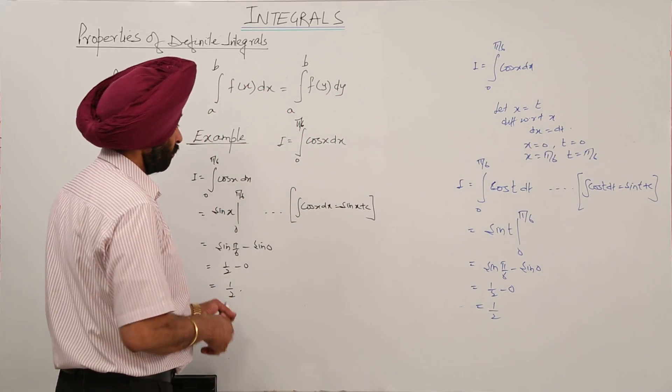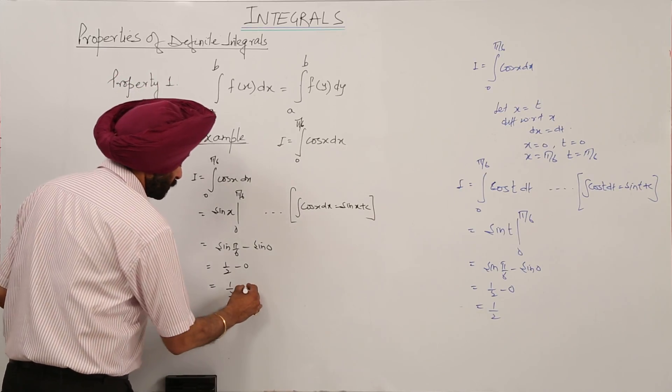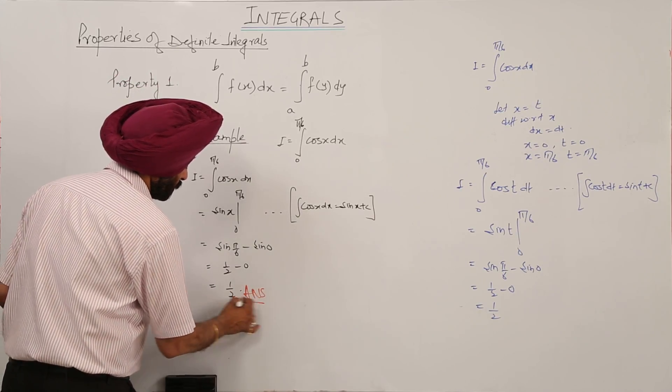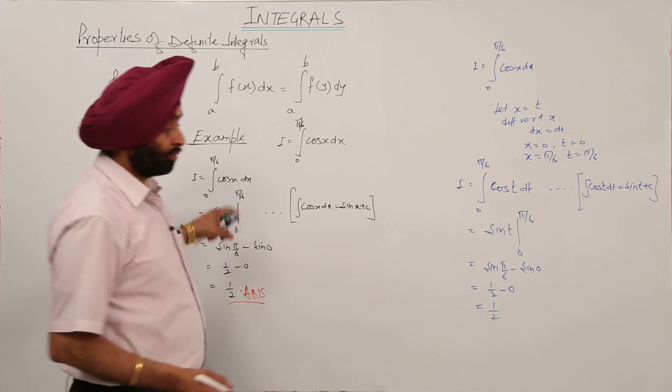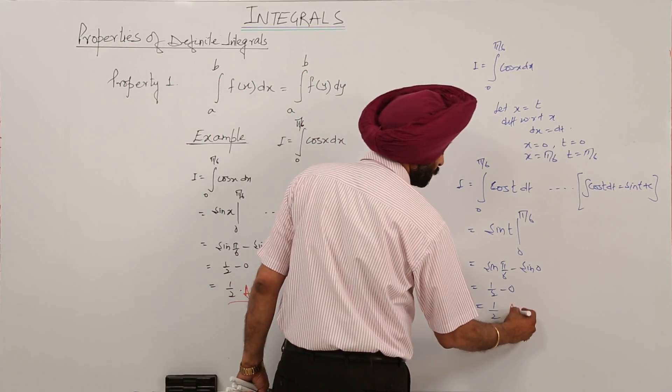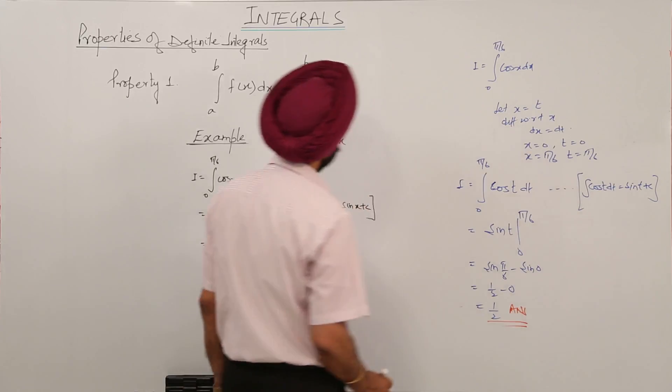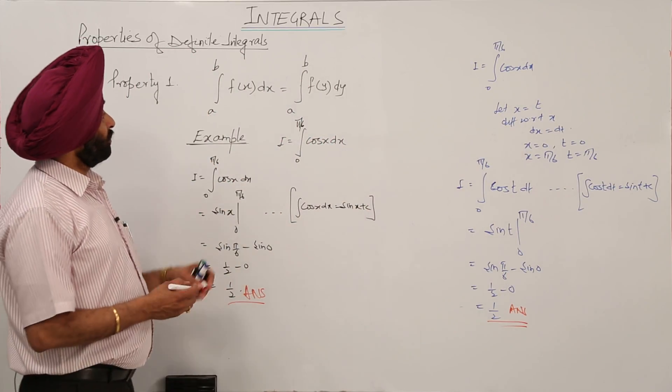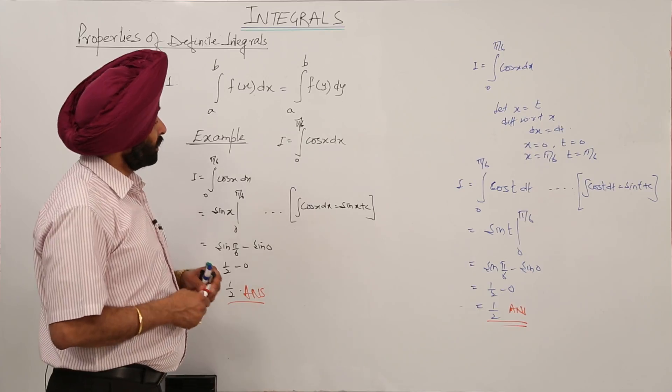Now this one is also answer when the question is with x dx and this is also the answer when it is with y dy. So first property a to b fx dx is equal to a to b f y dy.